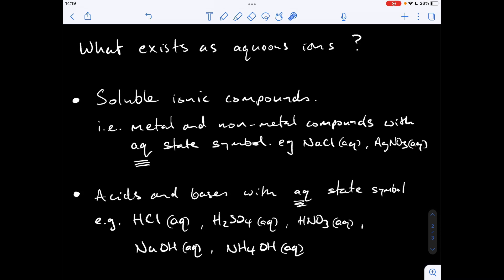And the other scenario that didn't feature in that reaction, but it is going to feature in a moment, acids and bases with the aqueous state symbol. So examples, these are all acids. So we've got hydrochloric acid, sulfuric acid, nitric acid, and now the bases. Sodium hydroxide, notice they're all aqueous, and this one here is also a base, aqueous ammonium hydroxide.